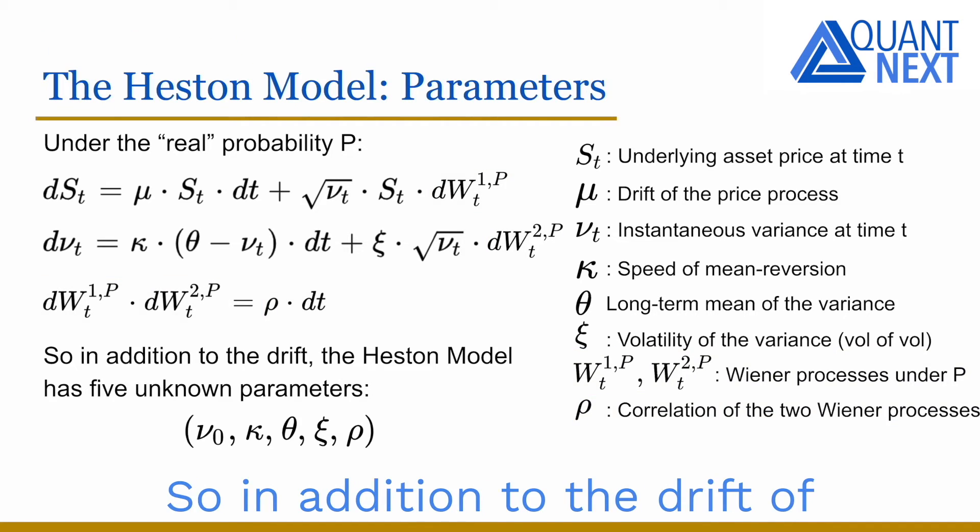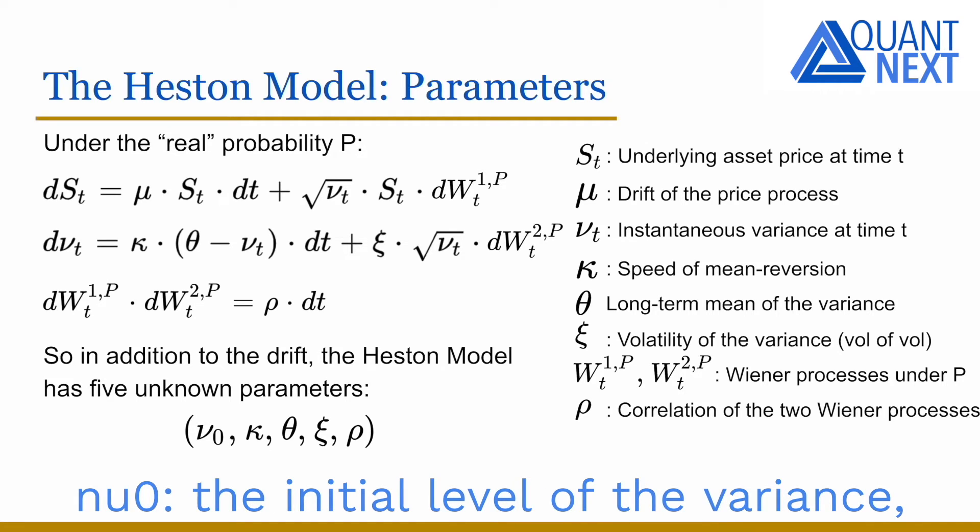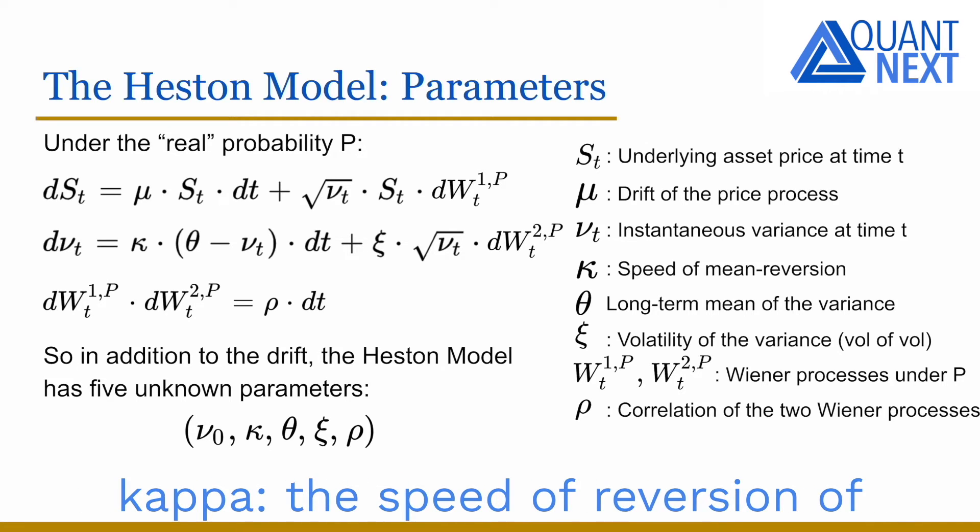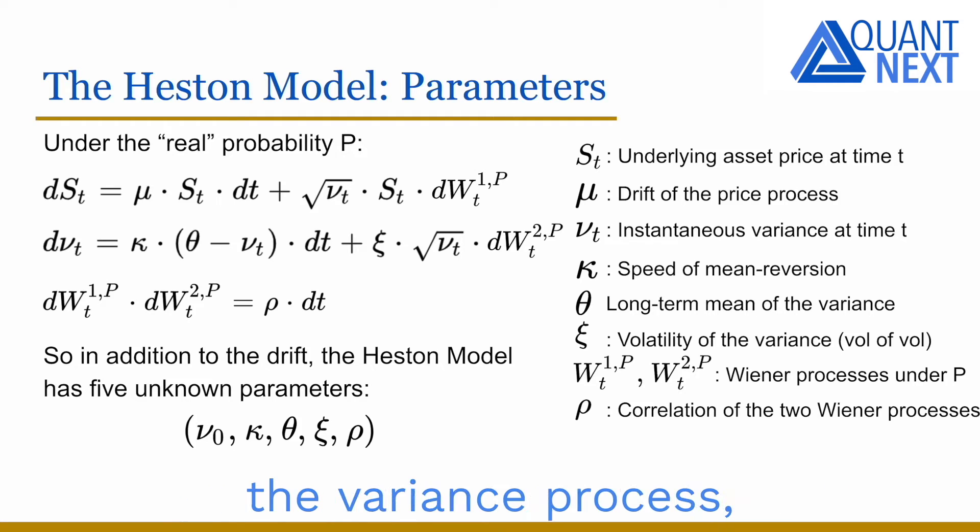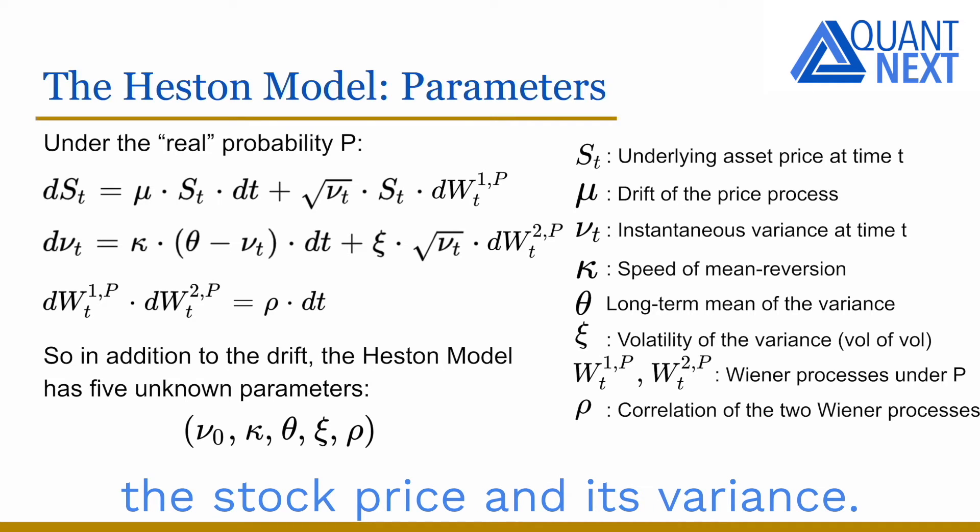So in addition to the drift of the asset price process, the Heston model has five unknown parameters: Nu0, the initial level of the variance; kappa, the speed of reversion of the variance process; theta, the long-term mean of the variance; Xi, the volatility of the variance or vol of vol; and rho, the correlation between the stock price and its variance.